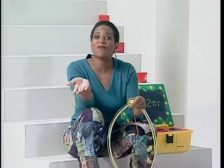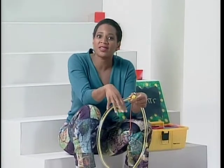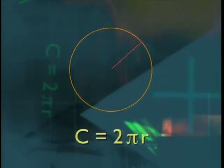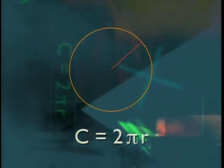To find the circumference, you double the radius and multiply it times pi. That's using the formula C equals 2 pi r.